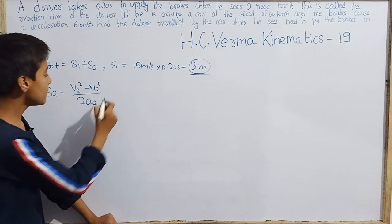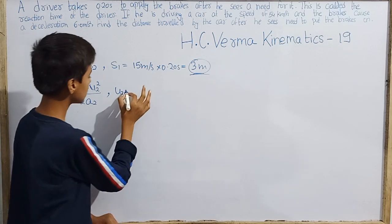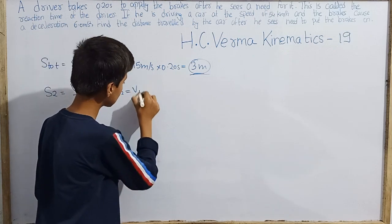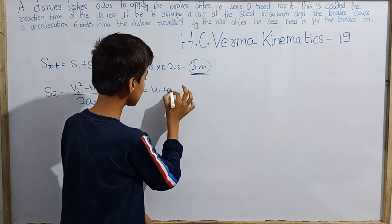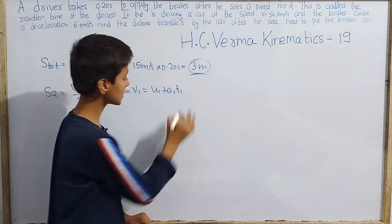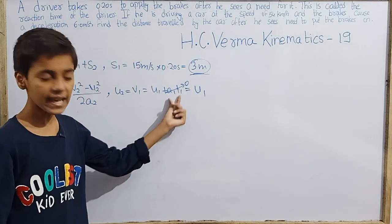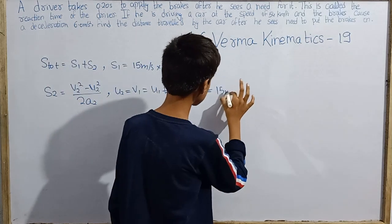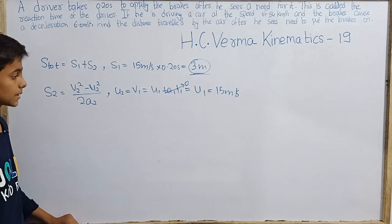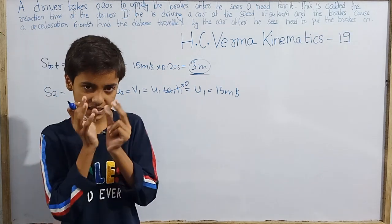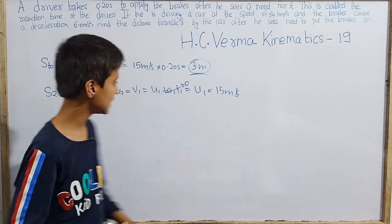The initial speed for the second journey equals the final speed of the first journey. Since acceleration during the first journey is zero, the speed remains u₁ = 15 m/s throughout. Therefore, u₂ = 15 m/s for the second journey.